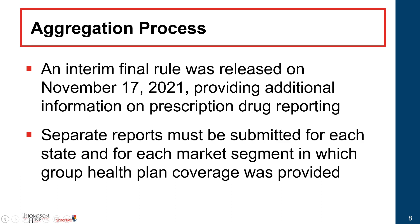Aggregation by state is permissible. For an entity with a fully insured policy, information must be included in the report for the state in which the insurance contract was issued. For self-insured policies, you look to the state where the plan sponsor has its principal place of business. If you have coverage through a group trust or MEWA, the information should be reported where the employer or association has its principal place of business.